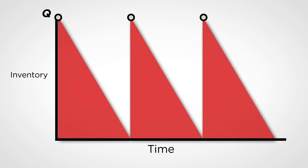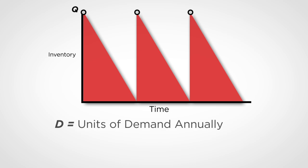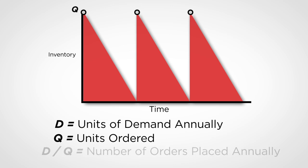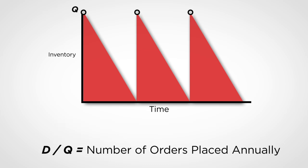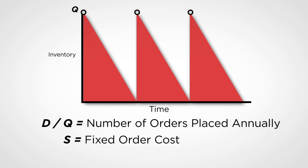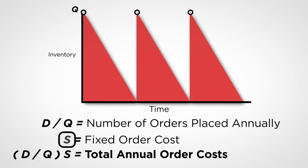We can now compute the fixed order costs and holding costs. Over the course of the year, you would have to serve D units of demand. Since you order Q units each time, you will place D over Q orders during the year. Each time you place an order, you incur a cost of S. Hence, the total order cost incurred during the year is equal to D over Q times S — the number of orders placed times the fixed order cost per order.